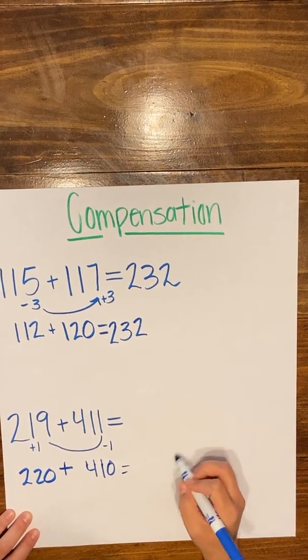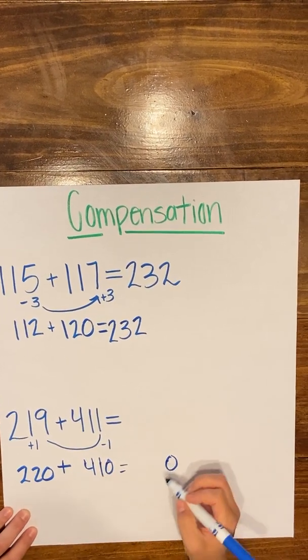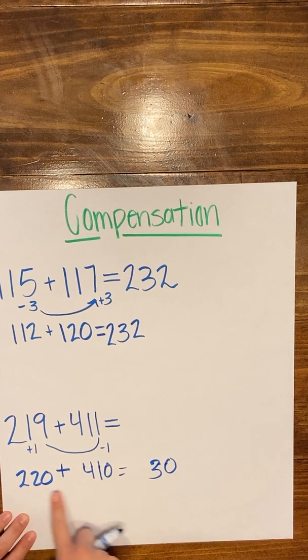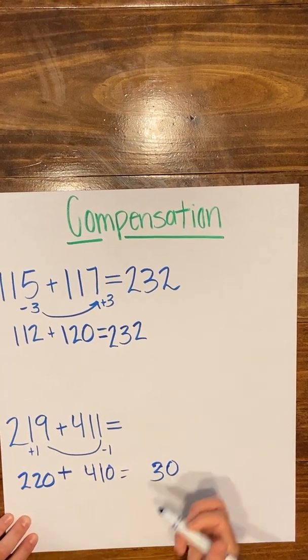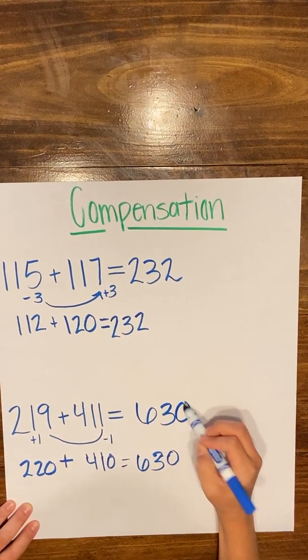So now, I have nothing in my ones place, 0 and 0. 2 plus 1 in my tens place is going to give me 3. And 2 plus 4 in my hundreds place is going to give me 6 or 600. So here, my sum is going to be 630.